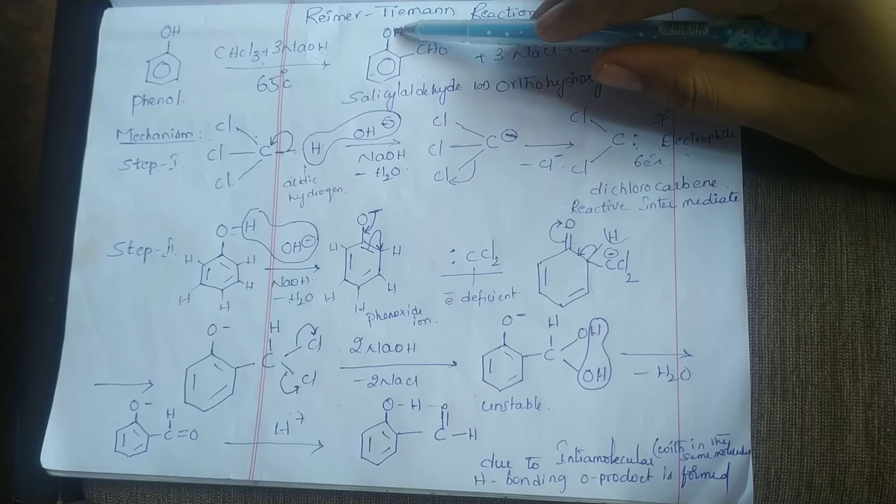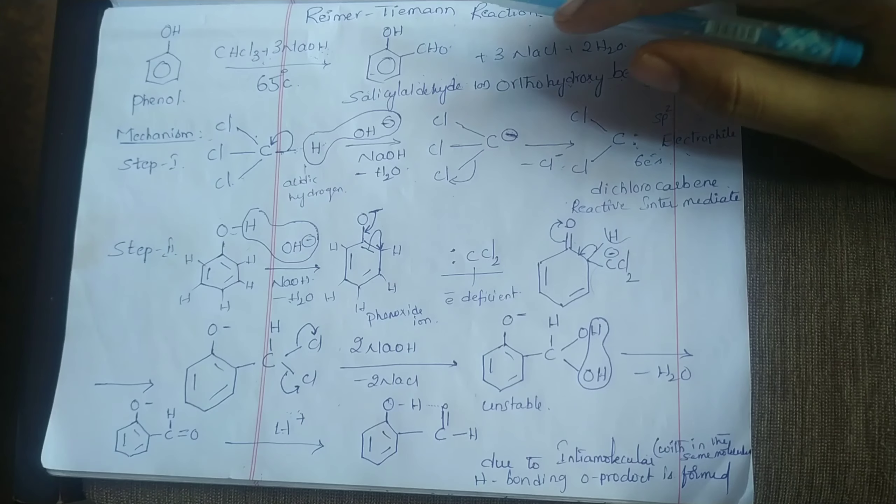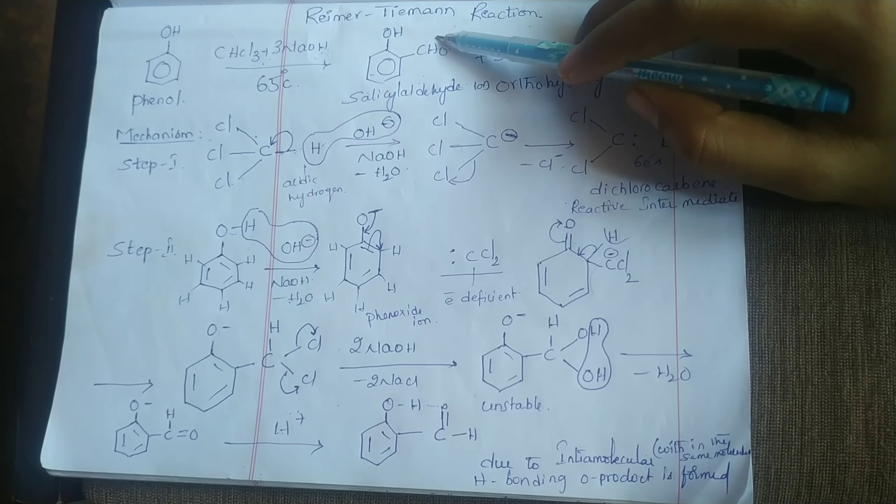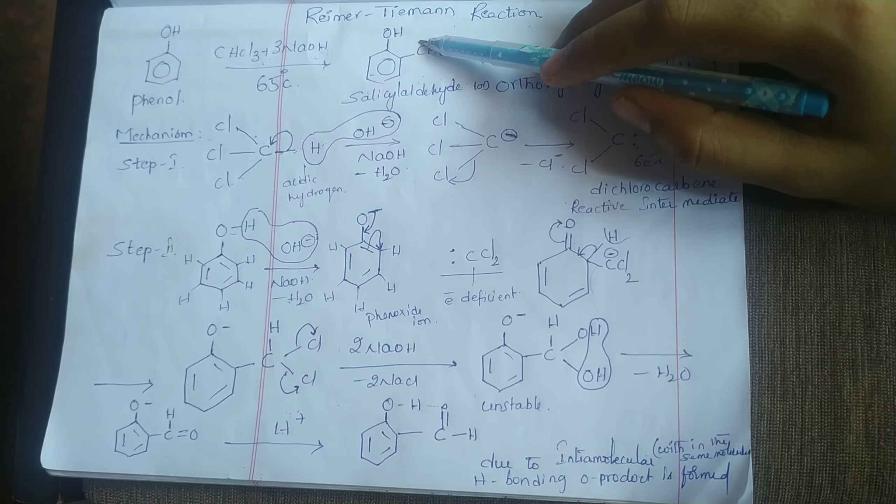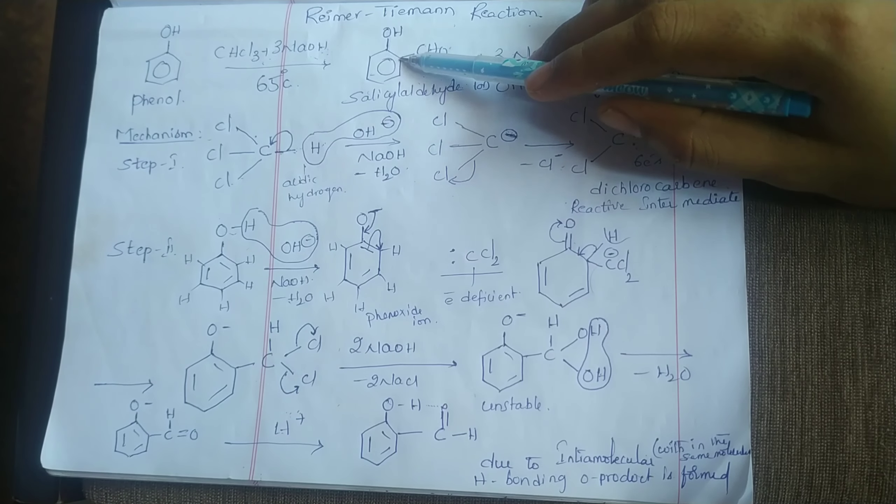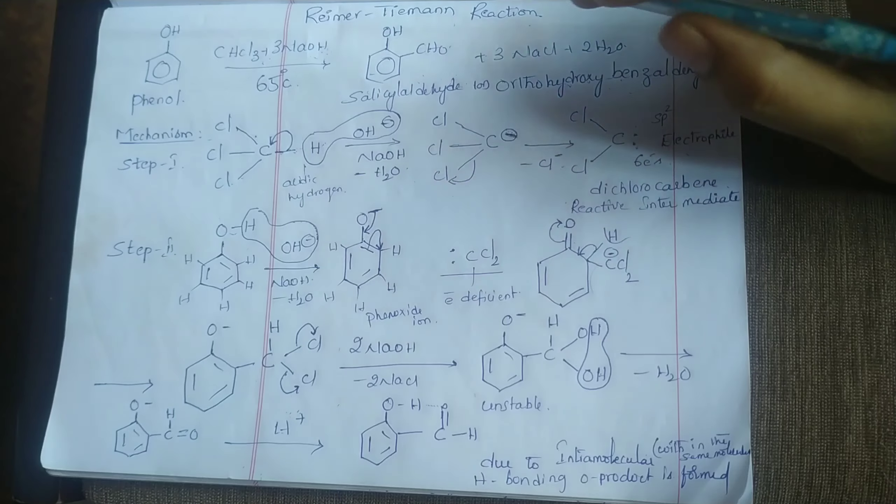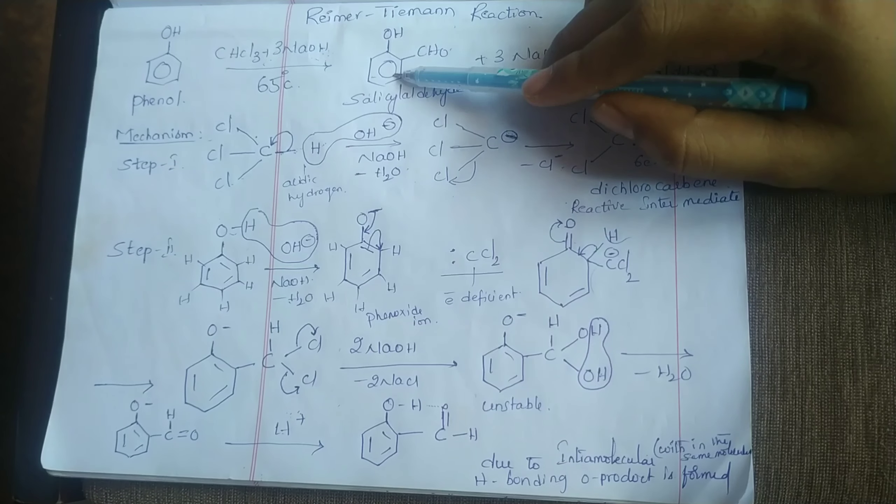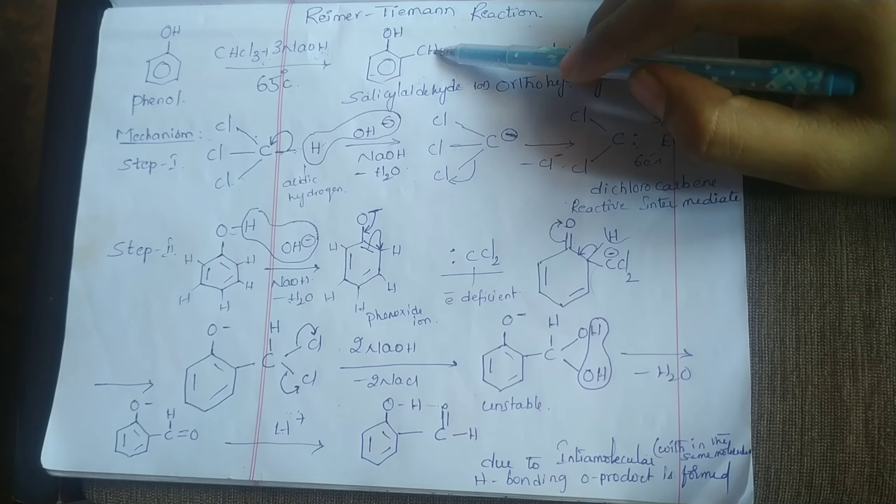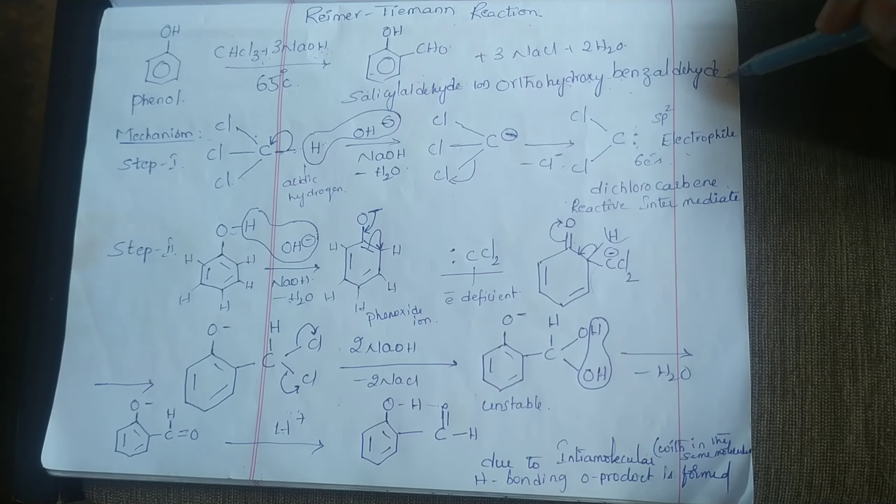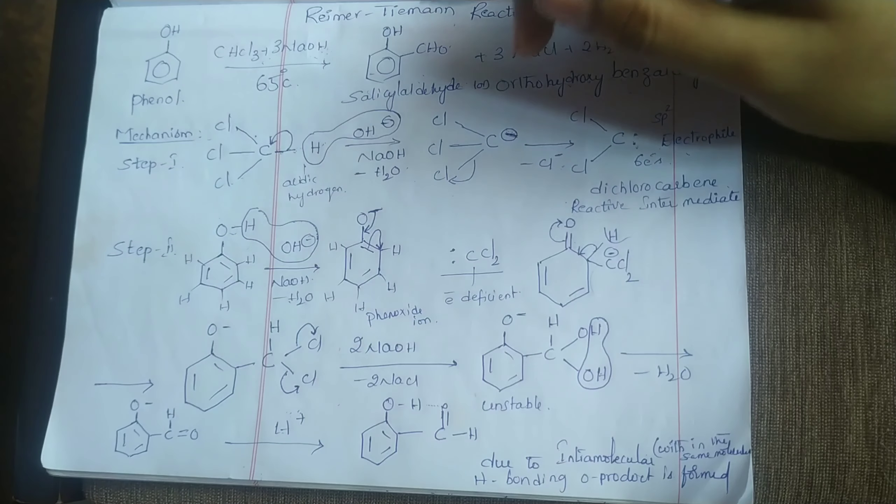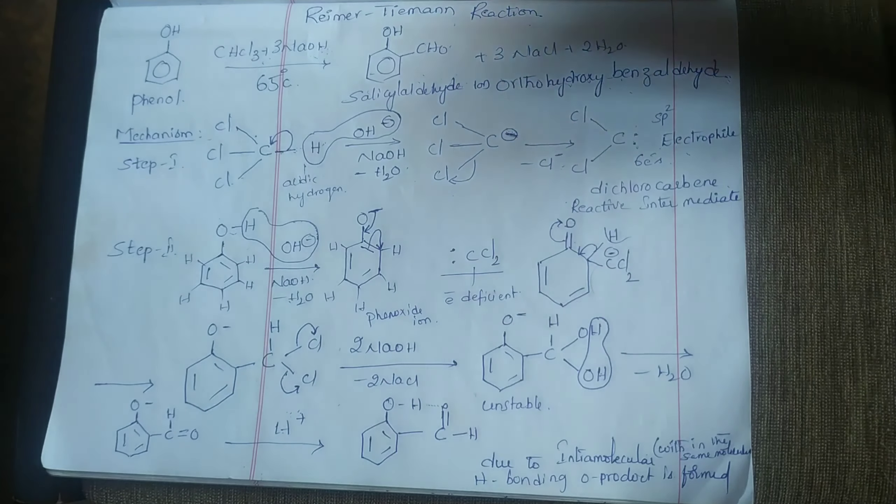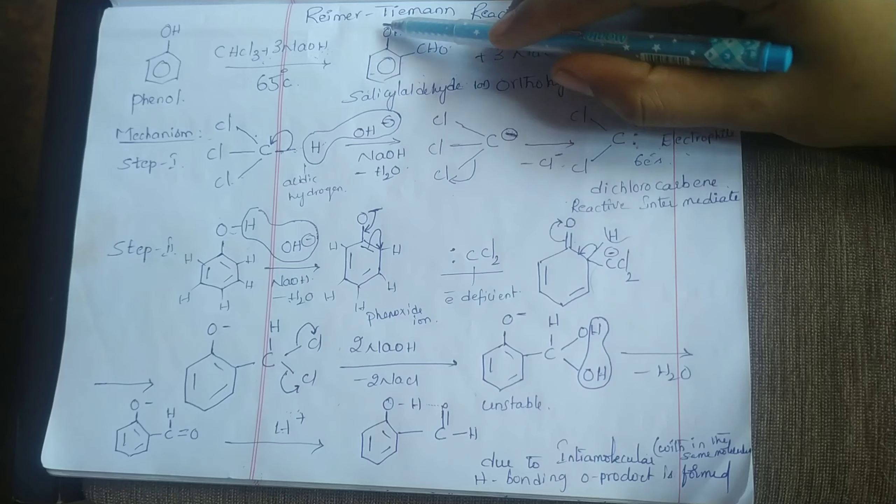Aldehyde group and hydroxyl group, but priority-wise, first priority will be given for aldehyde. So numbering will be given to this carbon: 1, 2, 3, 4, 5, 6. So this ring is benzene and this is aldehyde.